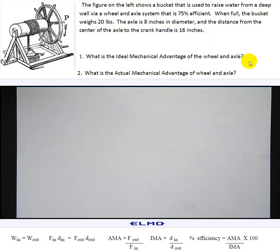Question number one, what is the ideal mechanical advantage of the wheel and axle? In this case we are using the wheel to drive the axle to pull, to wind the rope and pull the bucket up.